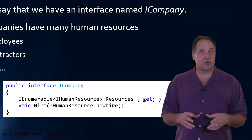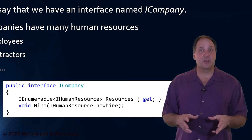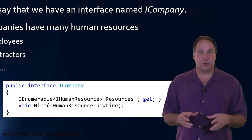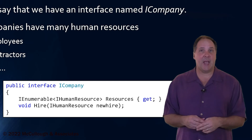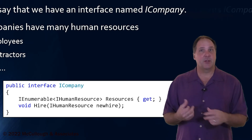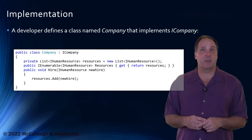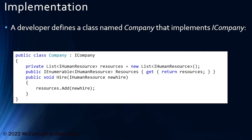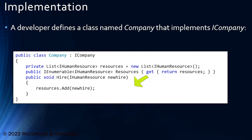What's going to happen, of course, is over time we're going to get additional requirements for new methods to be added to this interface. On the next slide, let's take a look at an implementation of iCompany. The developer defines a class called Company that implements iCompany. We're using a list to implement the list of resources, implementing the getter for the resources property, and we've added a hire method so that we can add items.